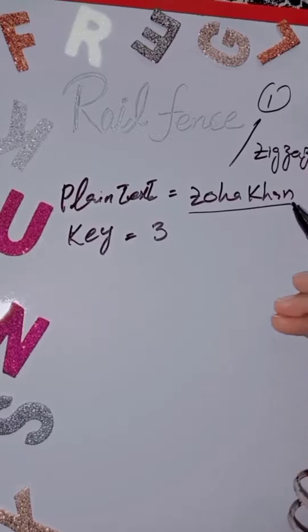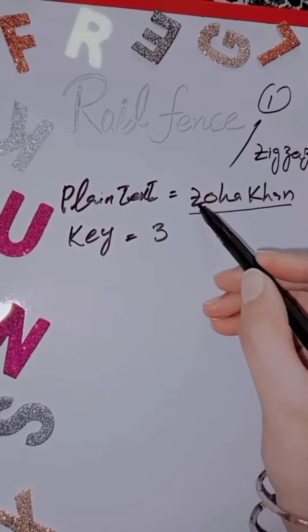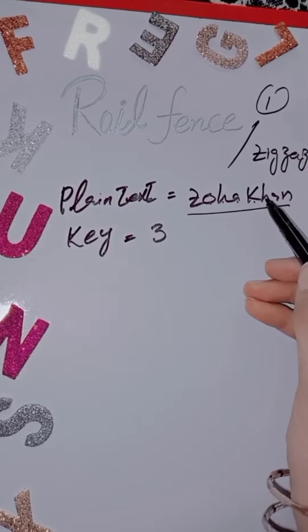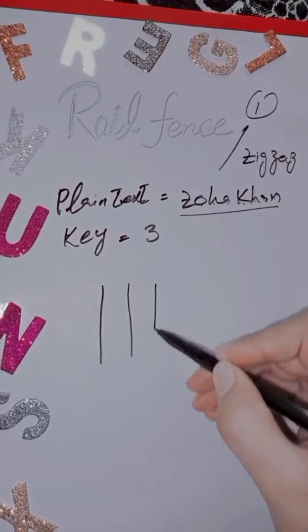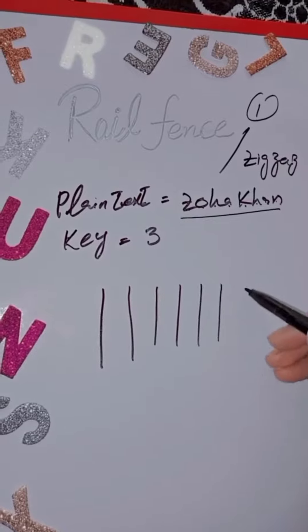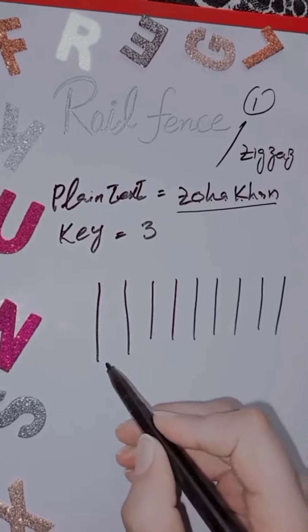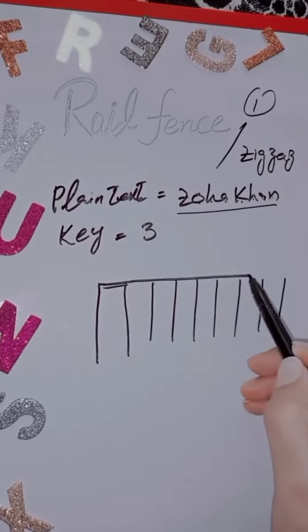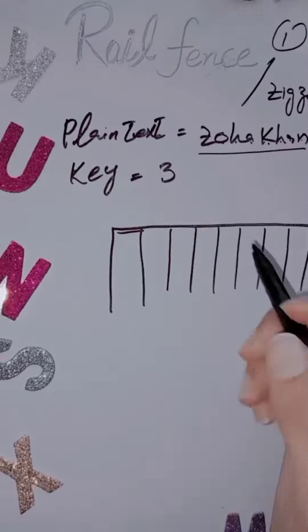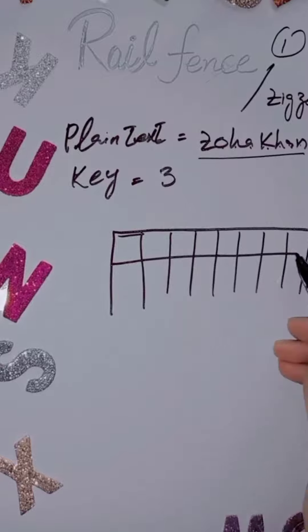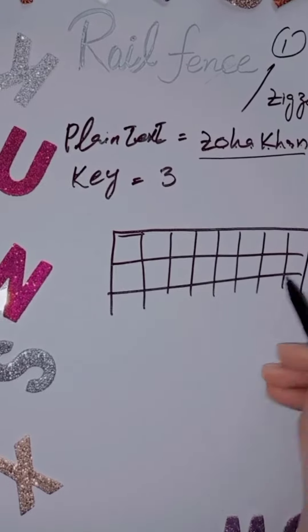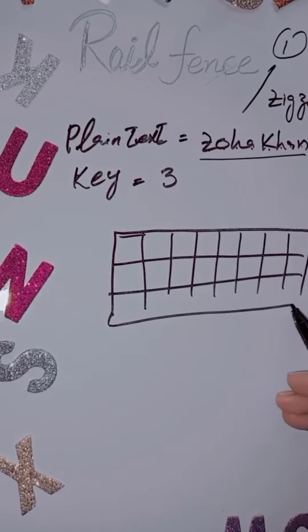We have the numbering. How many characters are there? 1, 2, 3, 4, 5, 6, 7, 8 — we have 8 columns. The key given represents the rows: 1, 2, and 3 rows.